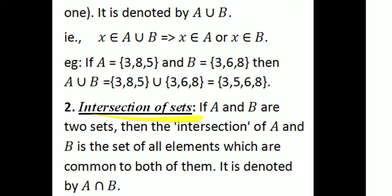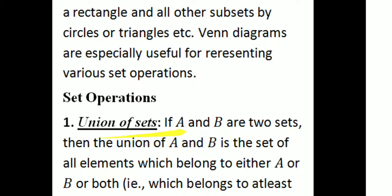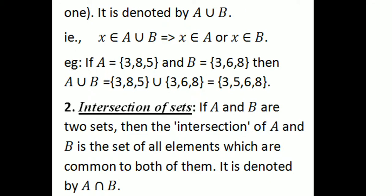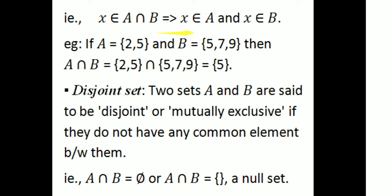The next operation is intersection of sets. If A and B are two sets, then the intersection of A and B is the set of all elements which are common to both of them. That is, X belongs to A intersection B, which implies X belongs to A and X belongs to B. For example, if A equals {2, 5} and set B equals {5, 7, 9}, then A intersection B equals the singleton set {5}.